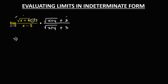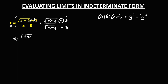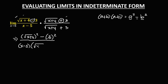Since we have a sum and difference pattern, if we have (a + b)(a - b), it equals a squared minus b squared. Applying this to the numerator gives the square of the first term minus the square of the second term. The denominator becomes (x - 5) times (√(x + 4) + 3).